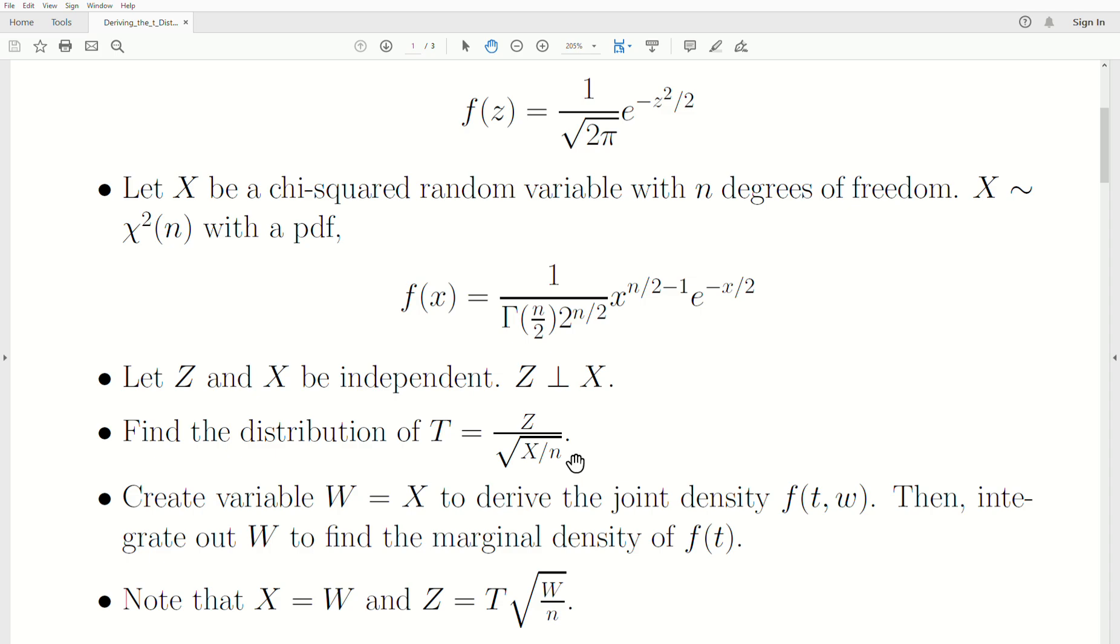But to do this, we need to create another variable that helps us in the transformation, and that's W equal to X. Then we'll use it to derive the joint density of T and W, and then we'll integrate out W to find the marginal density of T, which is what we're in pursuit of.